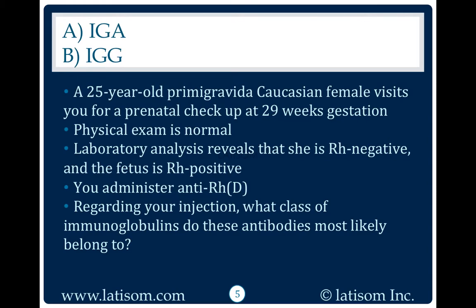A 25-year-old primigravida caucasian female visits you for a prenatal checkup at 29 weeks gestation. Physical exam is normal. Laboratory analysis reveals that she is RH negative and the fetus is RH positive. You administer anti-RHD. Regarding your injection, what class of immunoglobulins do these antibodies most likely belong to?